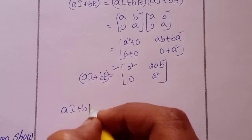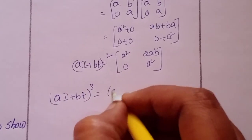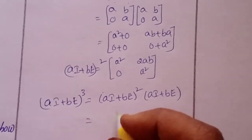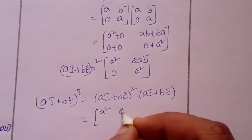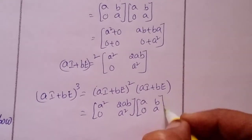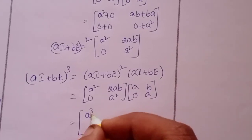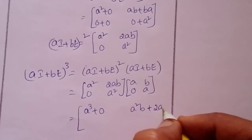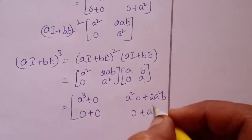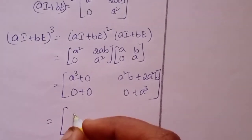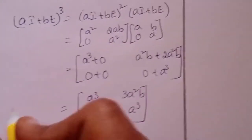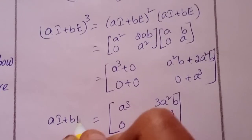Now compute (aI + bE)^3 equals (aI+bE)^2 into (aI+bE), that is [a^2,2ab / 0,a^2] into [a,b / 0,a]. Multiplying: (a^3+0), (a^2*b + 2a^2*b)=3a^2*b, (0+0)=0, (0+a^3)=a^3. So (aI+bE)^3 equals [a^3, 3a^2*b / 0, a^3]. This is LHS.